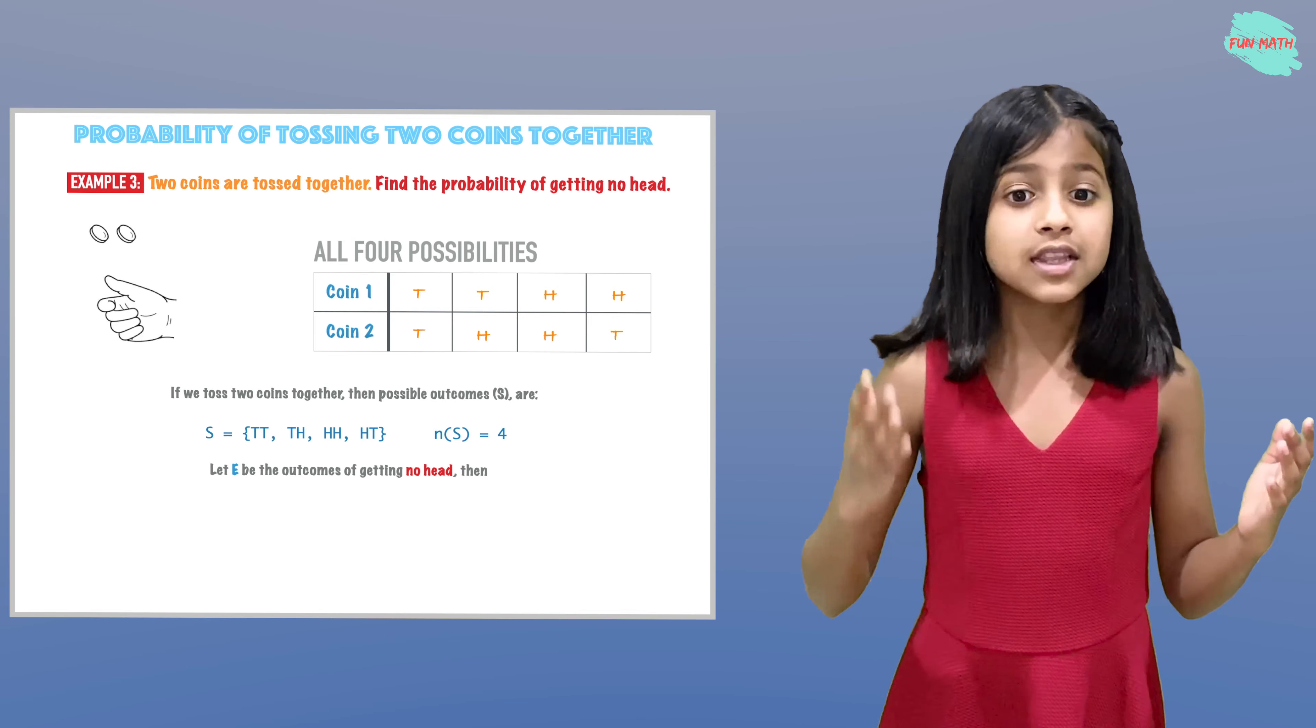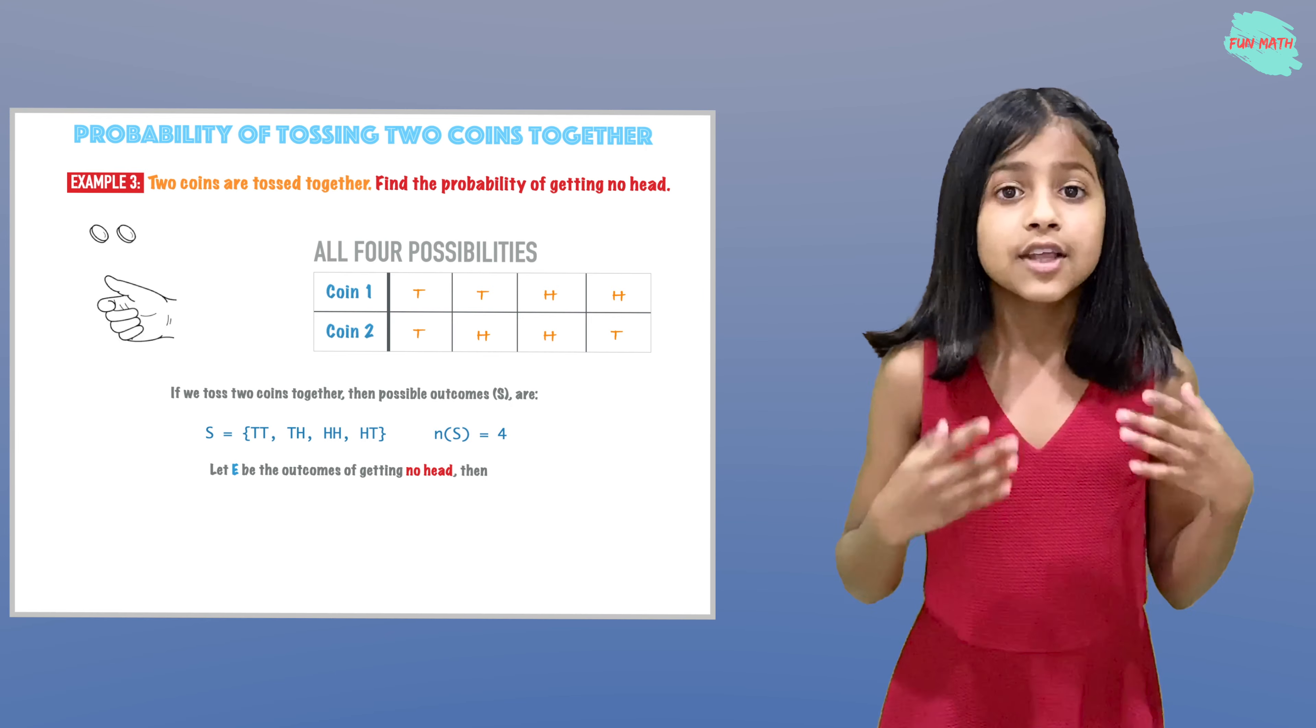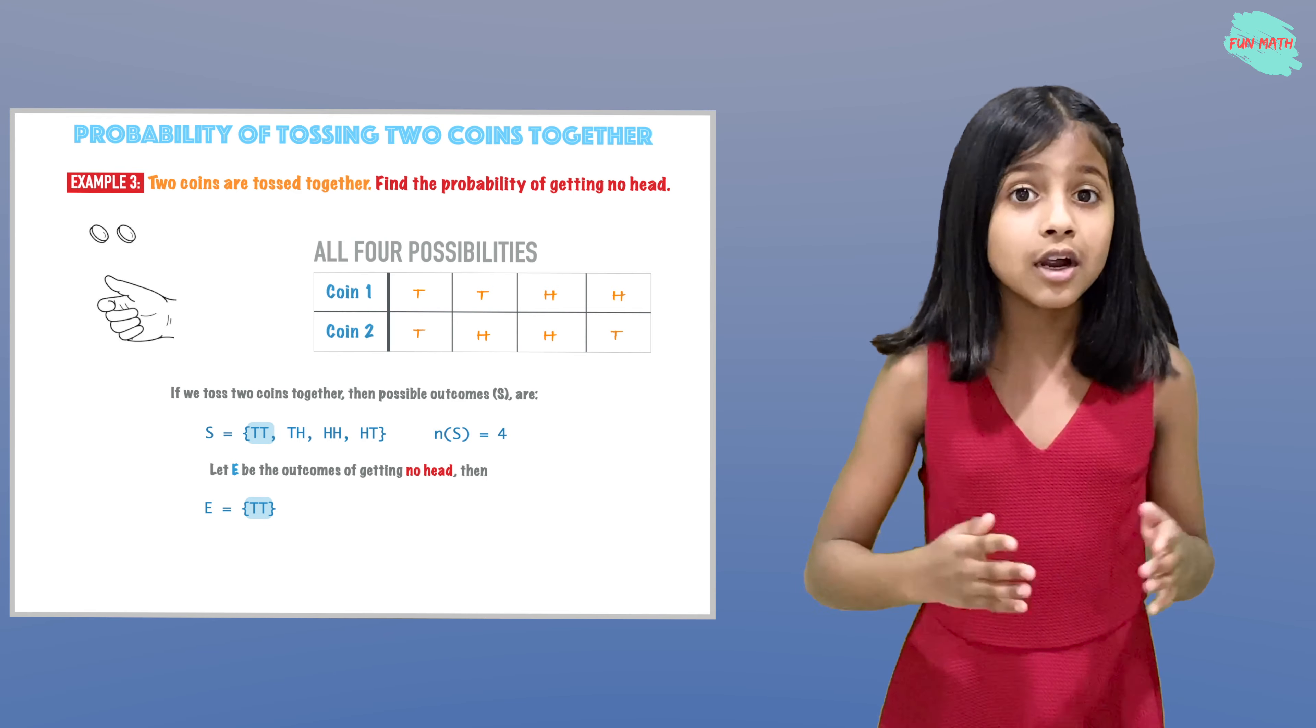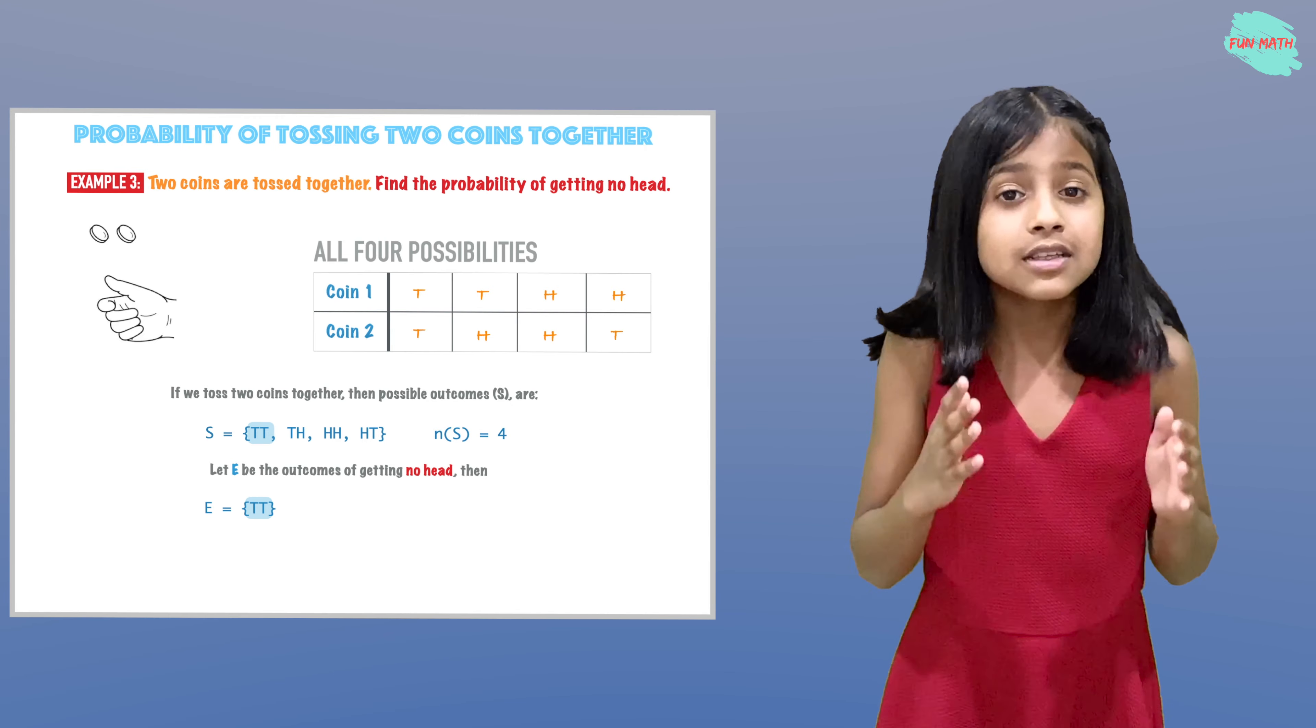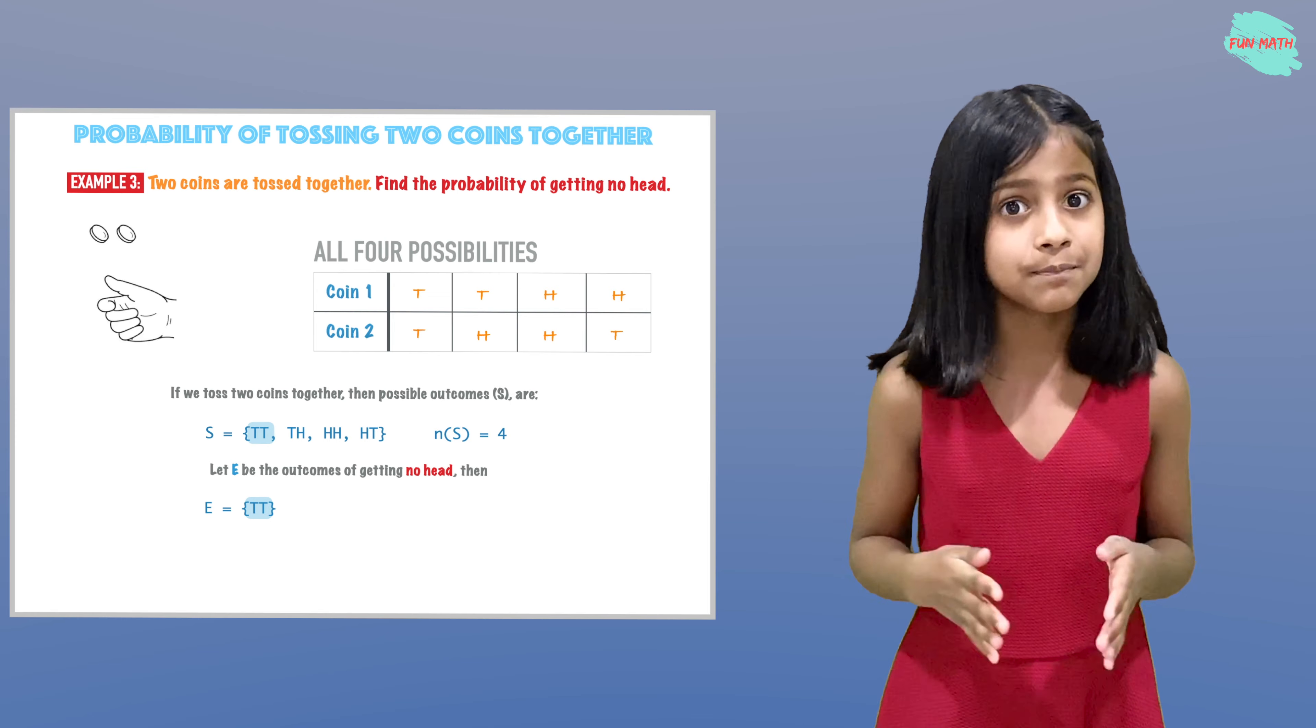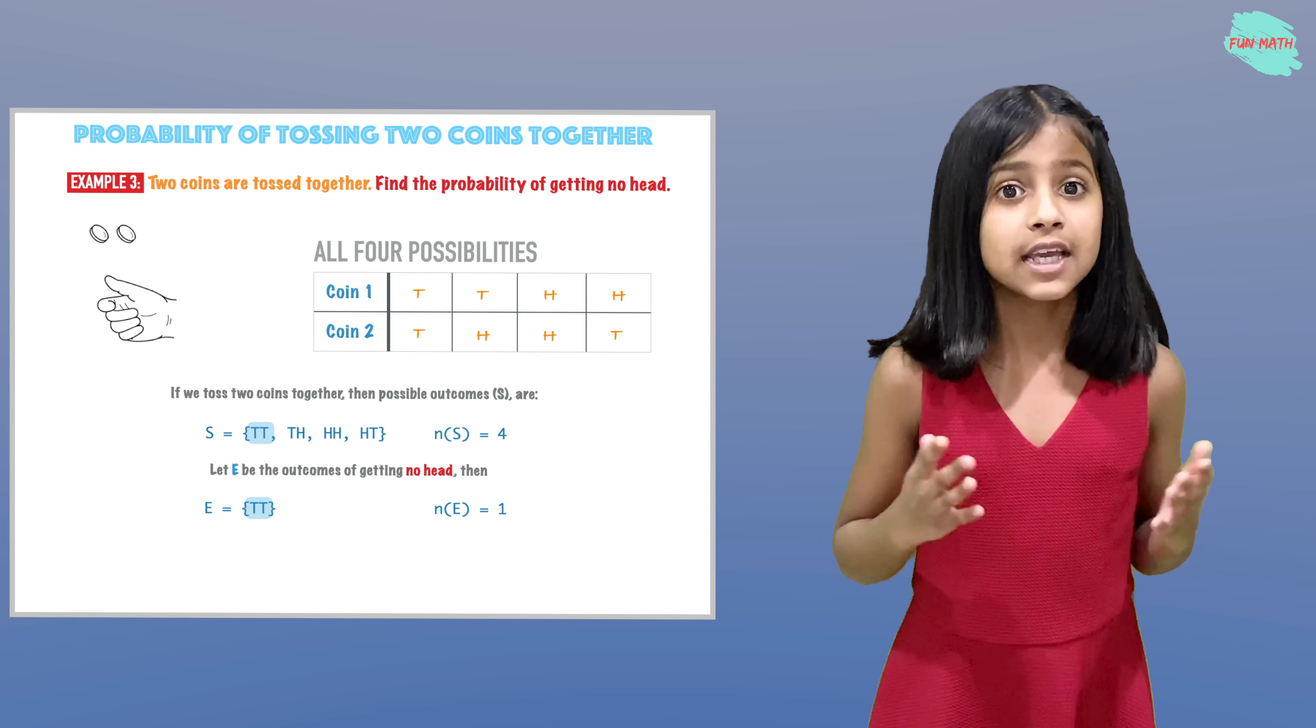Let E be the outcome of getting no head. Then E is tails and tails. But why do we have only one possibility? Because we're trying to find the possibilities that don't have any heads. That's why we have one possibility in E.